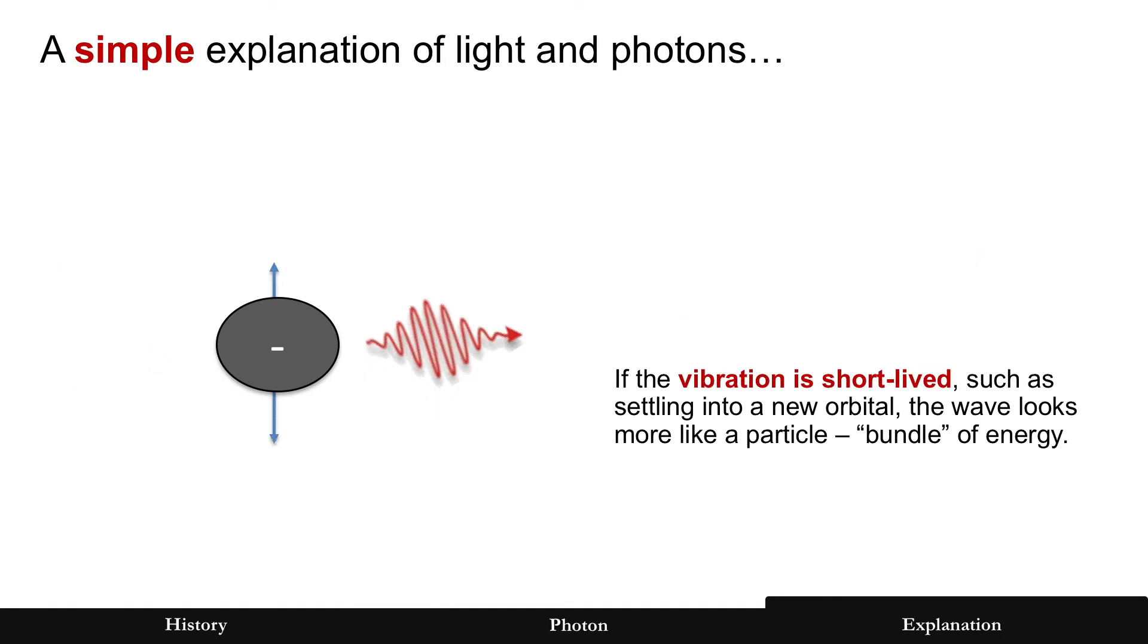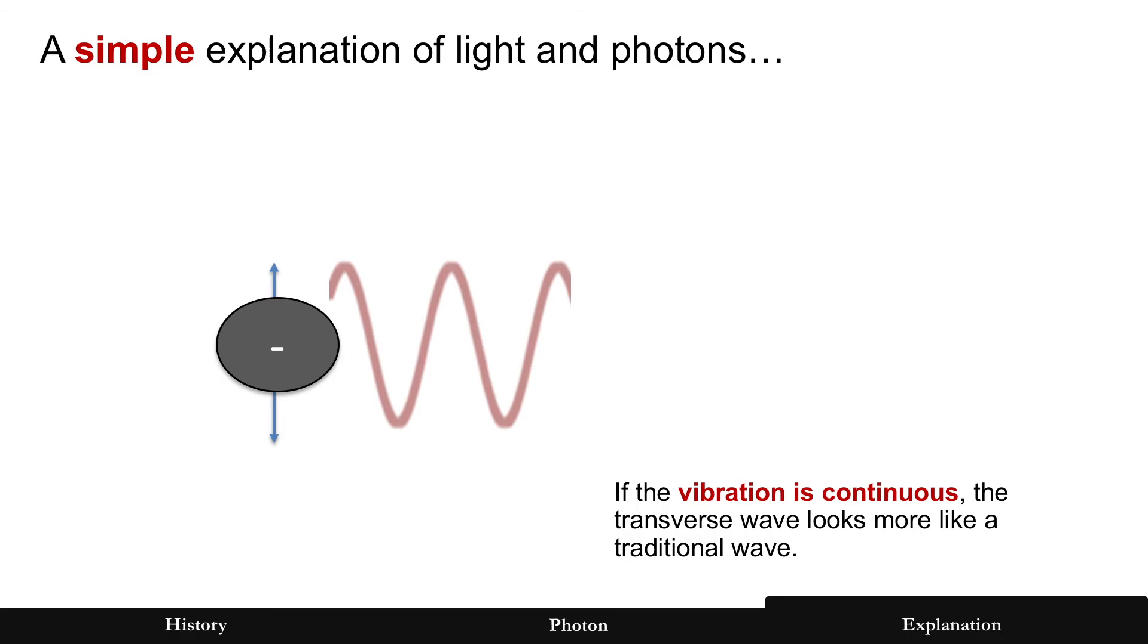If the vibration is short-lived, such as when the electron is settling into a new orbital, that wave looks more like a particle, a bundle of energy. But if the vibration is continuous, such as a radio wave, that transverse wave looks more like a traditional wave.